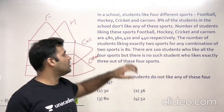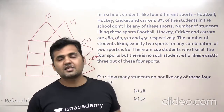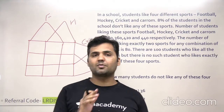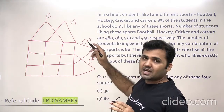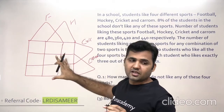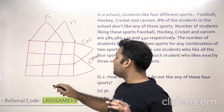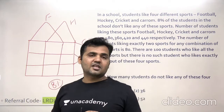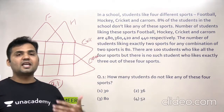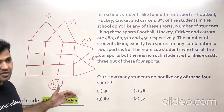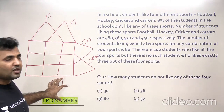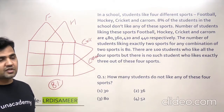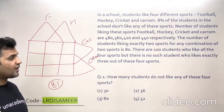8% of the students do not play any of the sports. When I say 8% of the complete set of students do not play any sport, that means these 8% do not belong to any of these four sets — they will be lying outside this region. So this Venn diagram is actually for 92% of the students, not 100%. Keep this information in mind; it will help you in finding the answers.